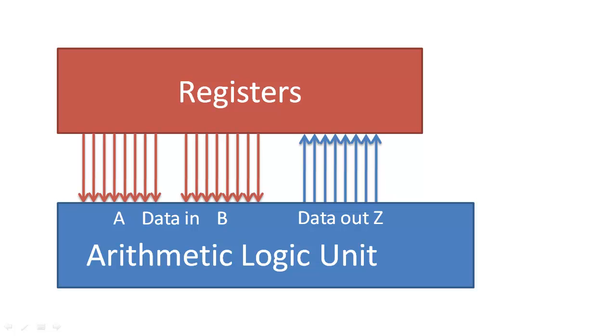We tell the ALU what instruction to perform by sending it a set of control bits that encode a message of what operation to perform. Because the ALU is a combinational circuit, it will perform these calculations immediately.